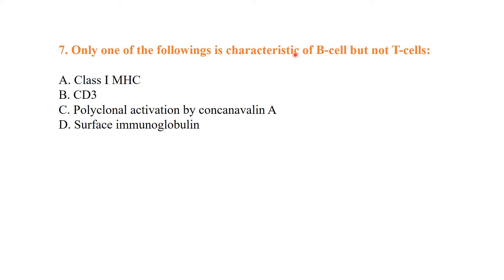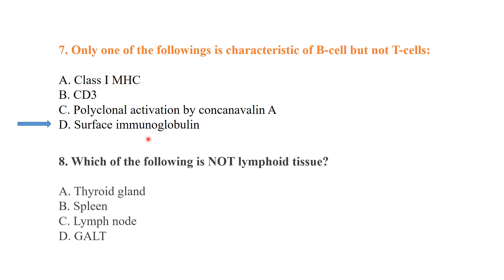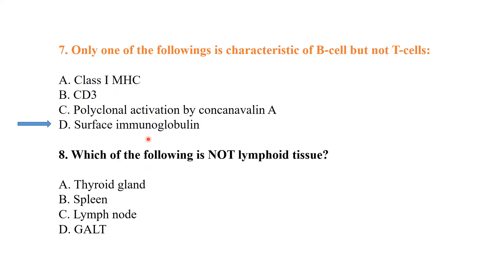Only one of the following is characteristic of B cells but not T cells. Both B and T cells are part of specific immunity. Among these, surface immunoglobulins are receptors present on B cells but not on T cells.